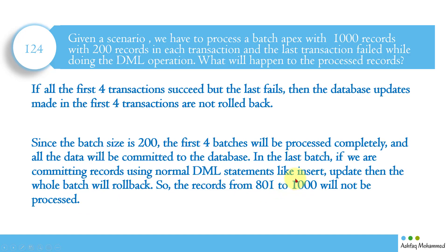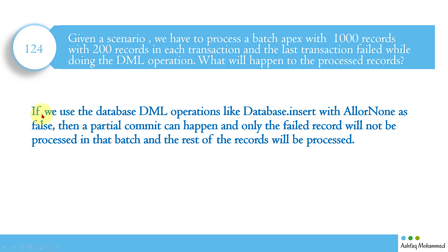If we use database DML operations like database.insert with allOrNone set to false, then a partial commit can happen — only the failed records will not be processed, and the rest will be committed. Using database.insert is generally safer, but it depends on your requirement. Sometimes if one record fails you don't want anything else to pass, in which case normal DML is appropriate.